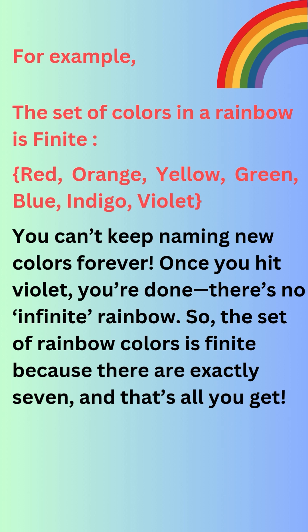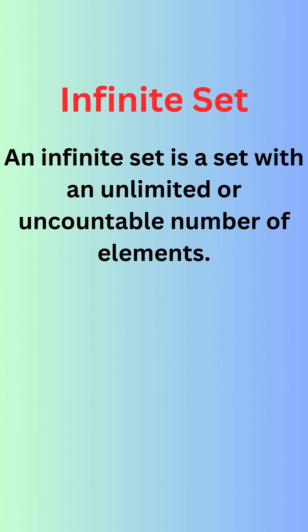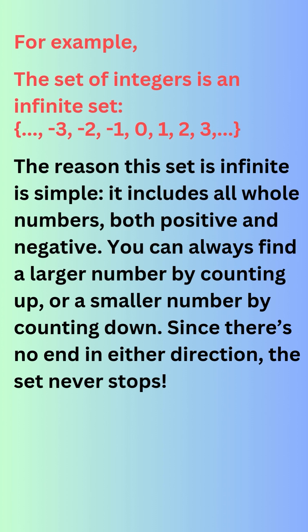So the set of rainbow colors is finite because there are exactly seven, and that's all you get. An infinite set is a set with an unlimited or uncountable number of elements. For example, the set of integers is an infinite set.